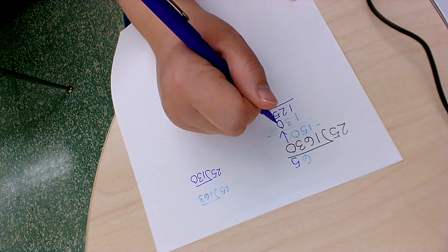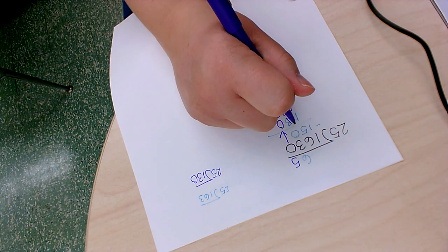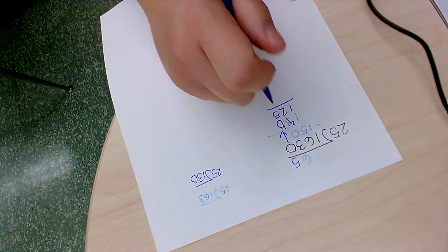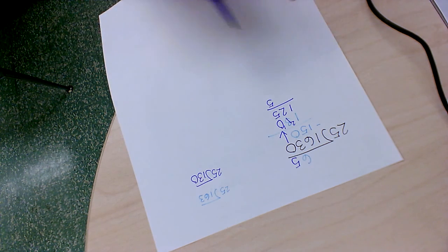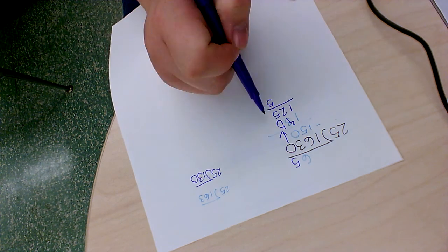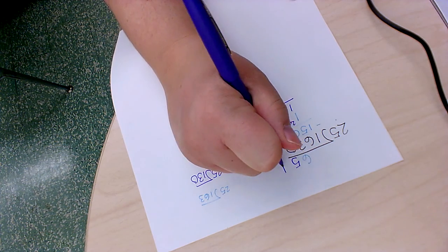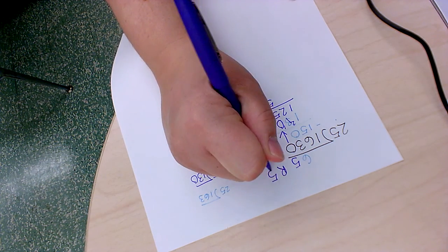Now we multiply. Five times 25 is 125. Now we subtract. I can't do that. So I need to borrow. Now I can't make another group. I have no more numbers to bring down. So my answer is 65 remainder 5.